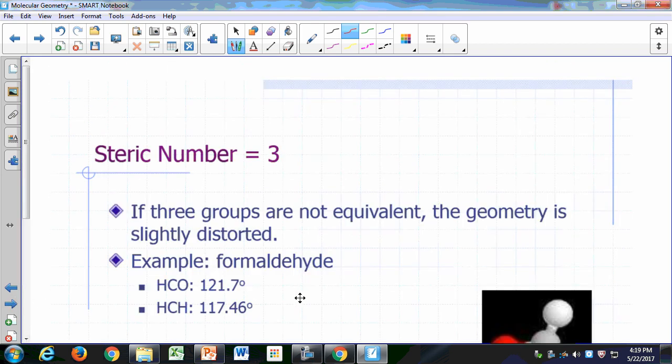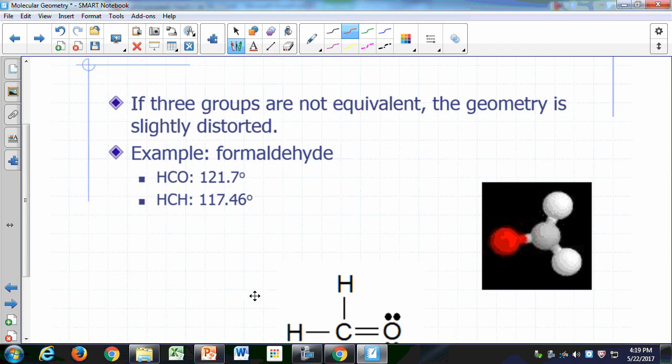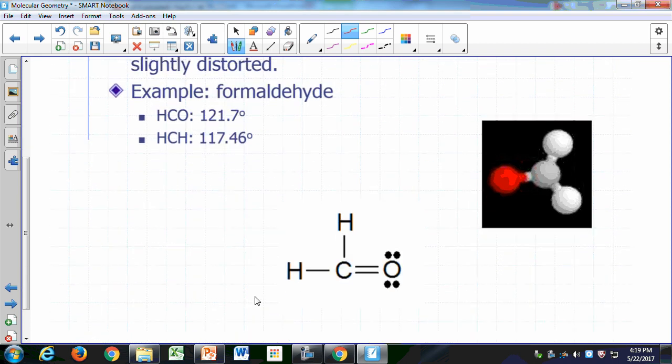Now, what are those, like I said, if those three groups are not equivalent, then the geometry is likely distorted. So for example, in the formaldehyde molecule.